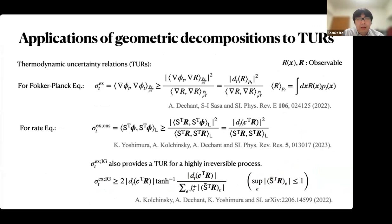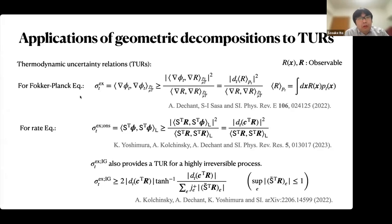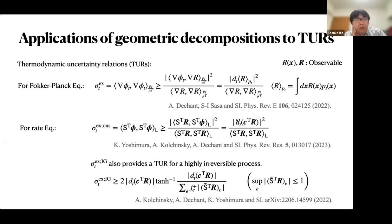The application of the geometric decomposition to the study of thermodynamic uncertainty relations (TURs): we believe this decomposition might be useful to study lower bounds on the entropy production rate. For the Fokker-Planck equation, the excess entropy production rate gives a good upper bound on the speed of an observable. For the rate equations, we can also obtain a tighter upper bound on this speed. The information geometric excess entropy production rate provides a TUR for highly irreversible processes.